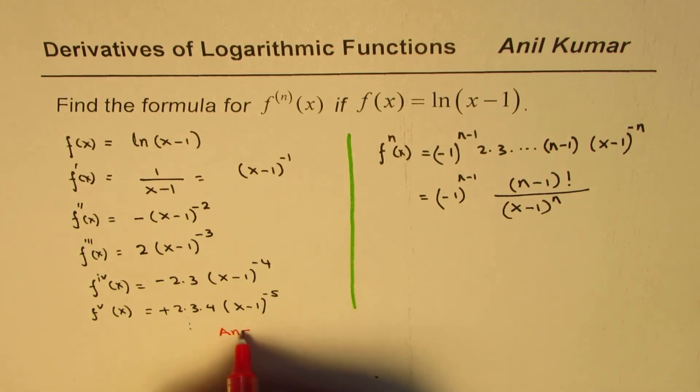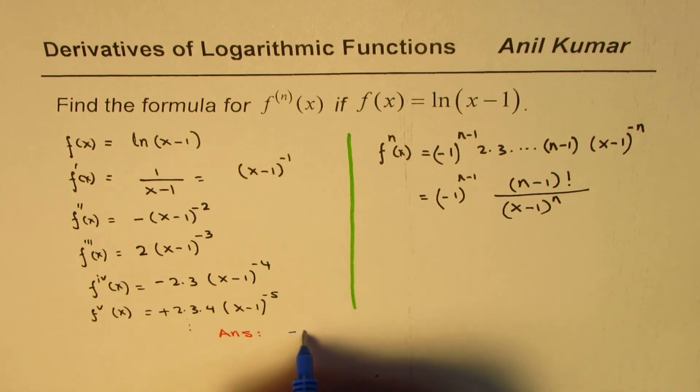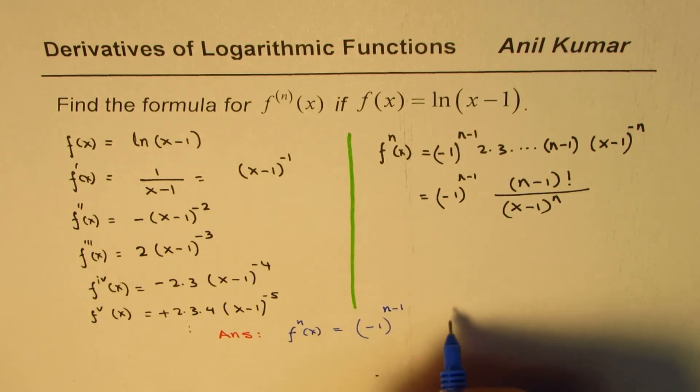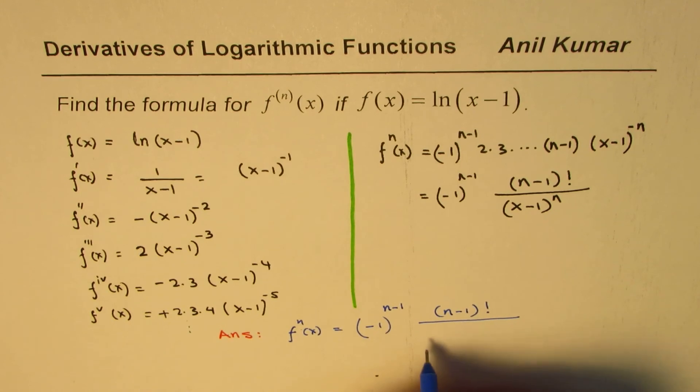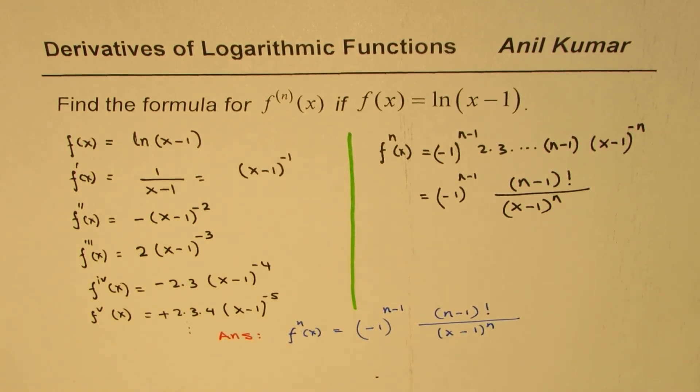So let me write down the answer here. The answer is f^(n)(x) equals (-1)^(n-1) times (n-1)! divided by (x-1)^n. So that becomes the general formula for the given question.